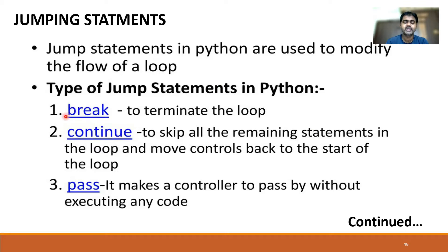There are three types of jump statements in Python. First, break — it is used to abruptly terminate the loop. Second, continue — it skips all the remaining statements in the loop and moves control back to the start of the loop. Third, pass — it makes the controller pass by without executing any code.